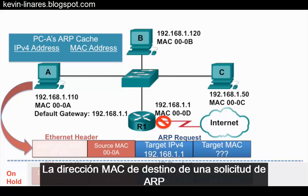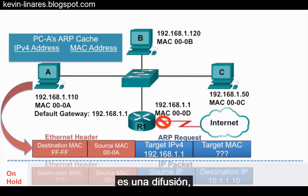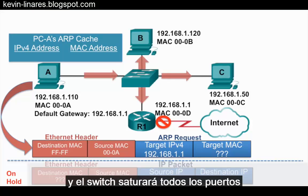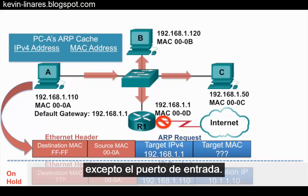The destination MAC address of an ARP request is a broadcast, so it will be sent to the switch, and the switch will flood it out all ports except for the incoming port.